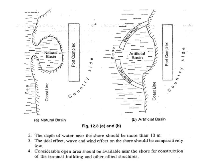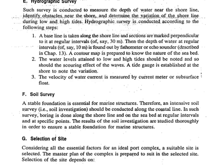Referring to figures 12.3a and b, the port complex is located near a natural basin protected from waves. Figure b shows an artificial basin created by providing a breakwater so that the port complex is protected. The depth of water near the shore should be more than 10 meters; the tidal, wave, and wind effects on the shore should be comparatively low; and considerable open space should be available near the shore for construction of terminal buildings and allied structures. Hydrographic survey is conducted to measure the depth of water near the shoreline, identify obstacles near the shore, and determine the variation of the shoreline during low and high tides.